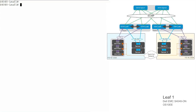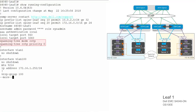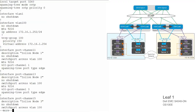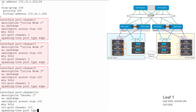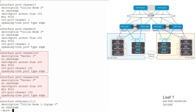Now we are configuring OS10 on leaf 1. Change the spanning tree type to RSTP to prevent loops. Make leaf 1 the root bridge by assigning a lower priority to it. Create a VLAN for each Isilon subnet, which also includes servers. Configure virtual router redundancy protocol (VRRP) to provide a secondary form of redundancy and assign priority and virtual IP address. Port channels 1, 3, and 5 serve as connections to Isilon nodes, whereas port channels 101 and 102 serve as connections to servers.